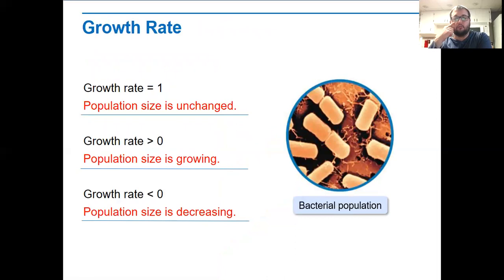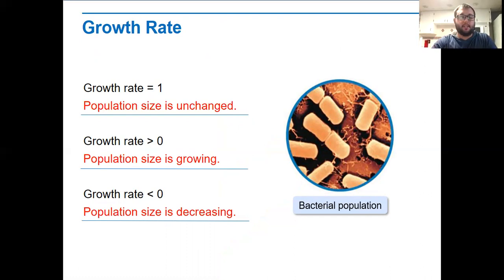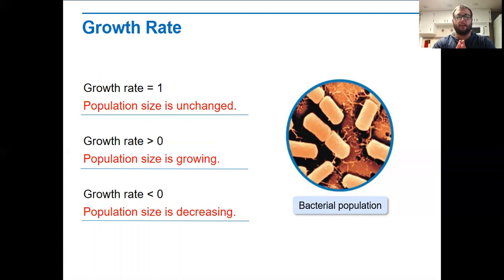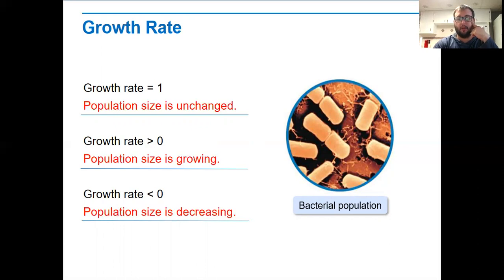Another thing we look at with populations is growth rate — is a population size growing? It's given a number between zero and unlimited. If a growth rate is equal to one, that means the population size is not changing — the amount of individuals leaving is the same as those coming in. If the growth rate is greater than zero, the population size is growing — more births than deaths. If the growth rate is less than zero, the population size is decreasing — we're losing members faster than we're gaining them.